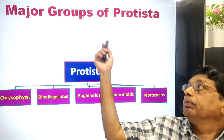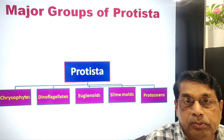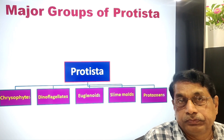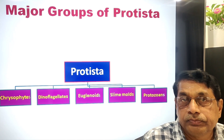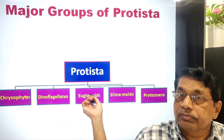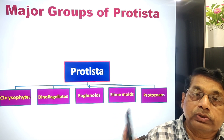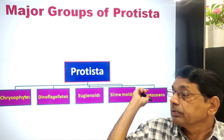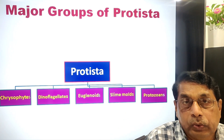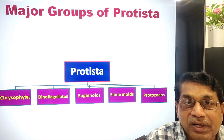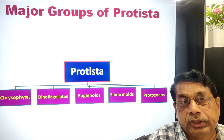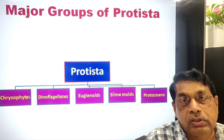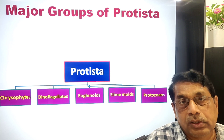Protista members are further differentiated into five groups: chrysophytes, dinoflagellates, euglenoids, slime molds, and protozoa. There is no resemblance between these groups character-wise — one is different from the other. But they are all included in Protista because of shared features: eukaryotic, microscopic, and unicellular.